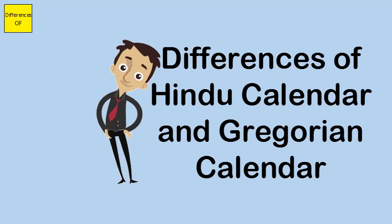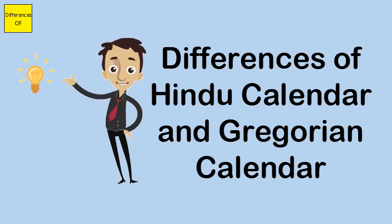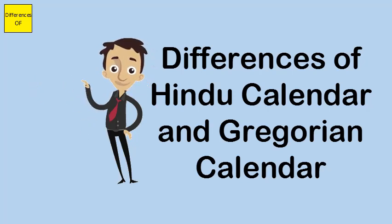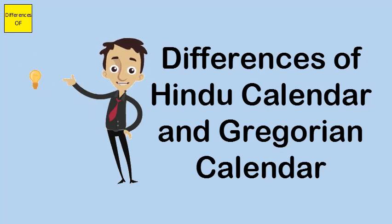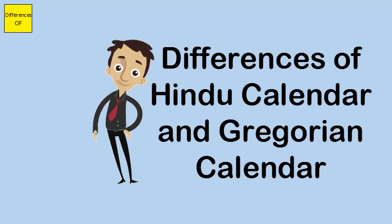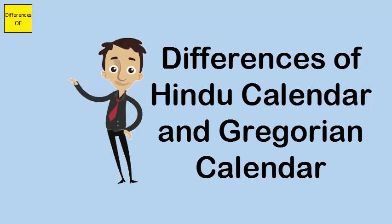The Gregorian calendar provides 30 or 31 days for each of the 12 months, while the Hindu calendar provides only 28 days for each of the 12 months. The Gregorian calendar does not have a provision called Adhika Masa, whereas the Hindu calendar provides Adhika Masa after every 30 months.